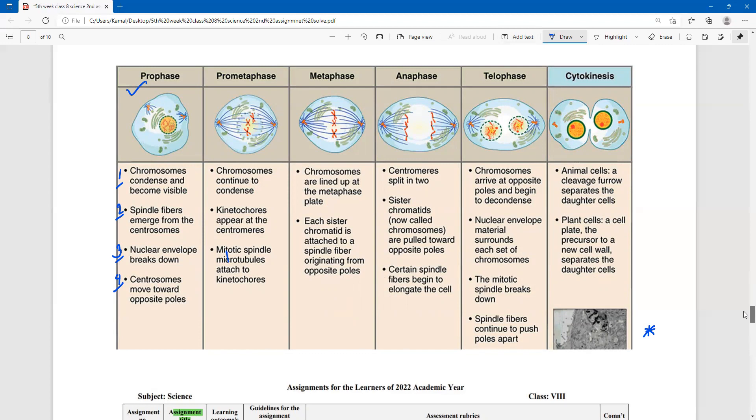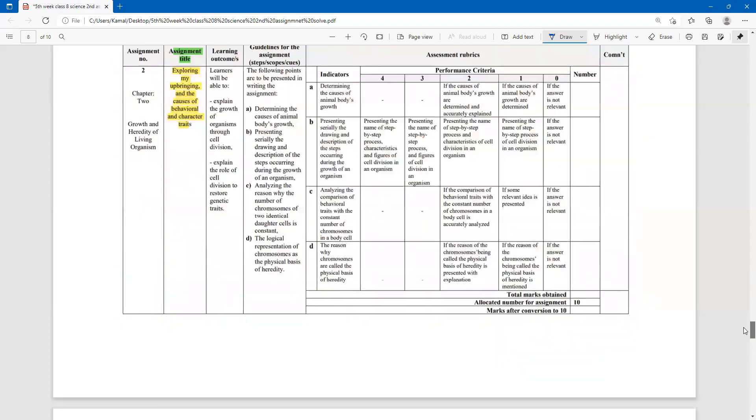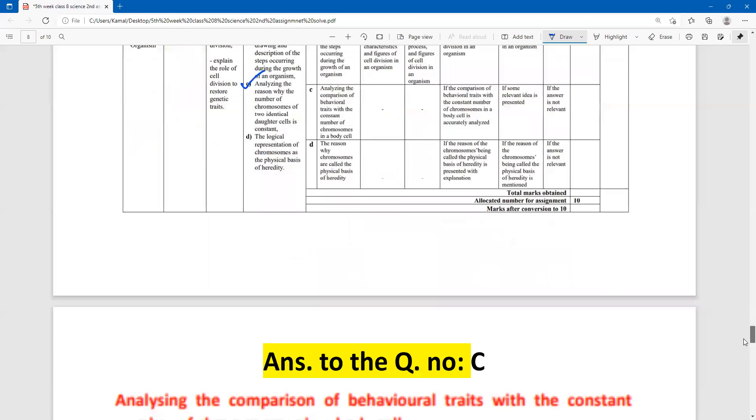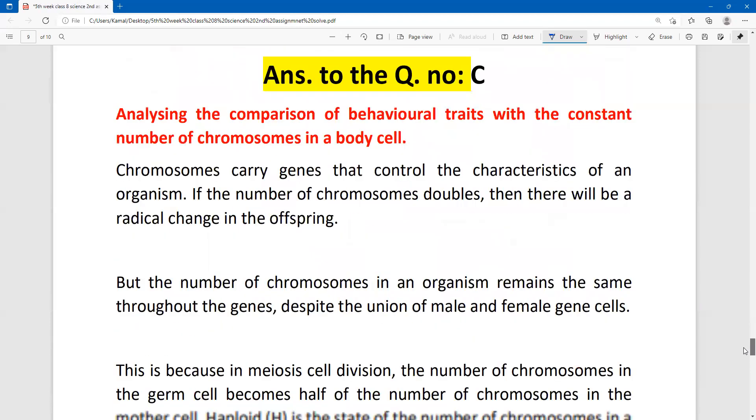Dear students, now let's see the next question, question number C. Analyze the reason why the number of chromosomes of two identical daughter cells is constant. This question mark is two. Dear students, this is the first part of this question. That is the first page, one C.